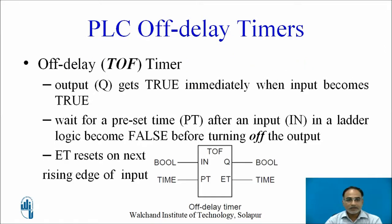Let us understand more about these off delay timers. In off delay timers, output Q gets true immediately when input becomes true, but it will wait for a preset time PT after the input in a ladder logic becomes false before turning off the output. The ET value resets on every next rising edge of input.